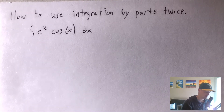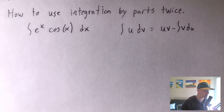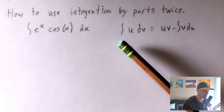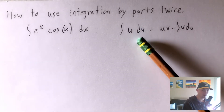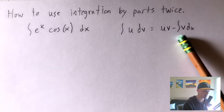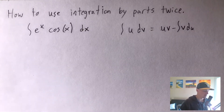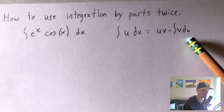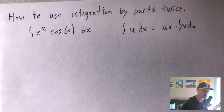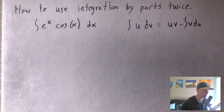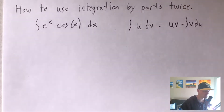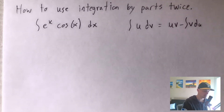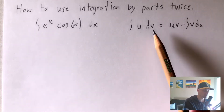We're going to be applying integration by parts in this problem, so let's start with what that formula looks like. The integration by parts formula says if we have the integral of u times dv, we can rewrite that as u times v minus the integral of v du. The idea is that we're rearranging our integral to get a different, hopefully easier, integral. The first thing to do is look at your function — in this case, e to the x times cosine x — and designate which piece is u and which is dv.